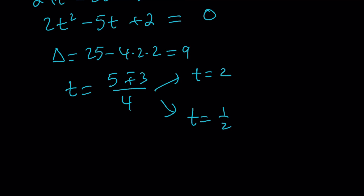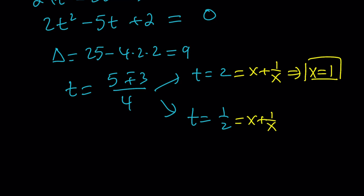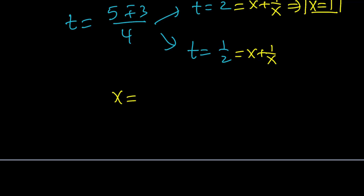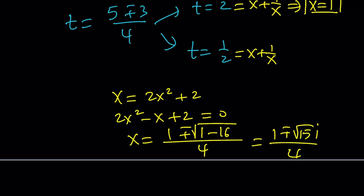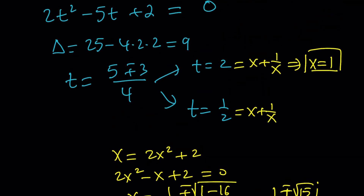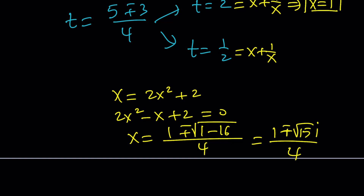We got nicer values here than with the first method. If t equals 2, then x plus 1 over x equals 2, which gives the single real solution x equals 1. If x plus 1 over x equals 1 half, multiplying everything by 2x gives 2x squared minus x plus 2 equals 0, and the quadratic formula yields complex solutions: 1 plus or minus the square root of 15i, divided by 4. So the second method gives one real solution and two complex solutions.